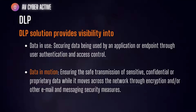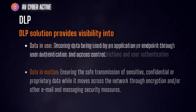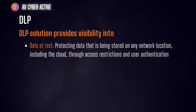Data in motion is the first line that ensures safe transmission of sensitive and confidential data. Third is data at rest — the data stored in your hard drive or on a server. This protects data stored on network locations including the cloud through access restriction and user authentication, preventing unauthorized access using a DLP solution.